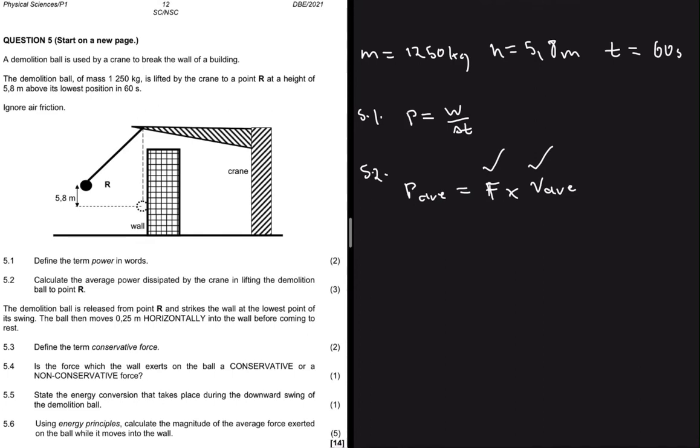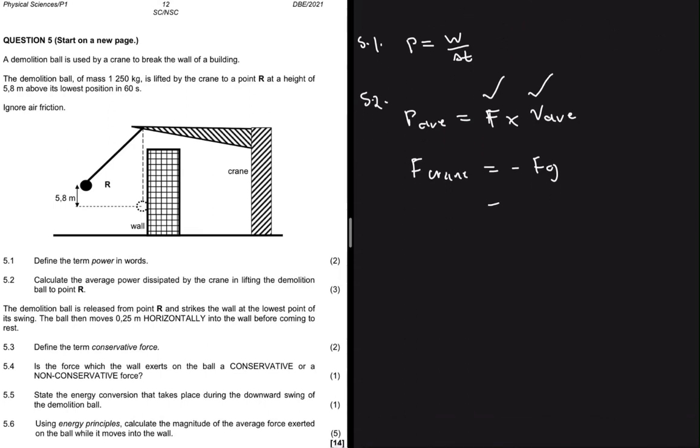The only force that's acting on the ball apart from the force exerted by the crane is force of gravity. So that is to say F crane is equals to minus F_g, because these forces are balancing out and the demolition ball is moving at constant speed. So that is equals to minus mass multiplied by gravity.